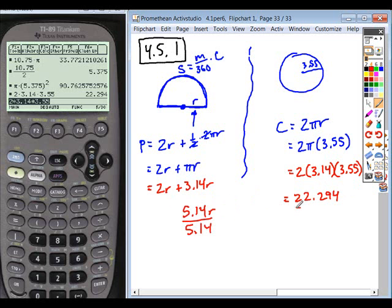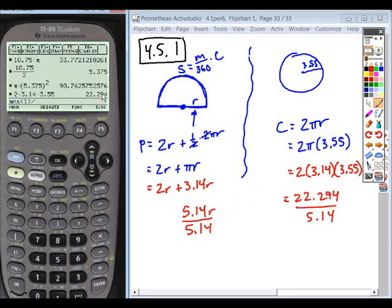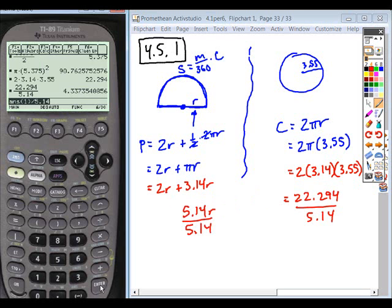So in solving, we're going to divide both sides by 5.14. So if I take this running total here, divide it by 5.14, I get my radius, 4.33735.